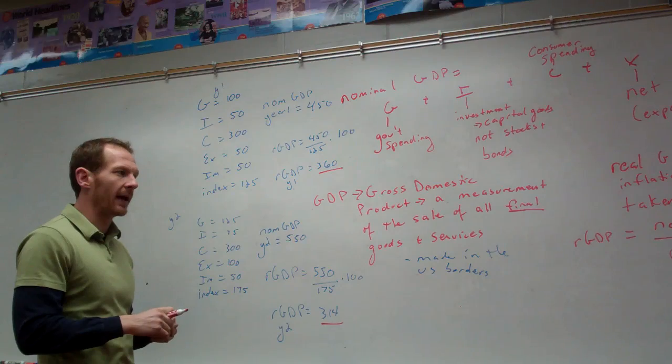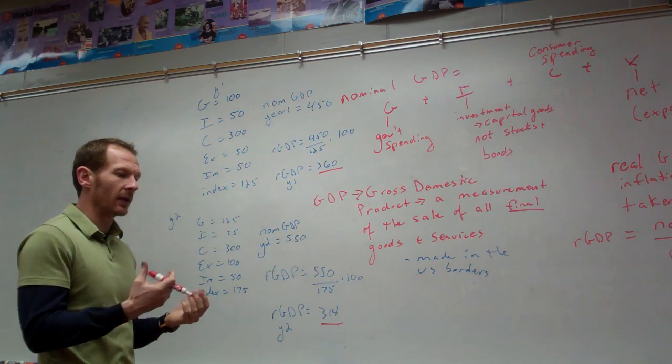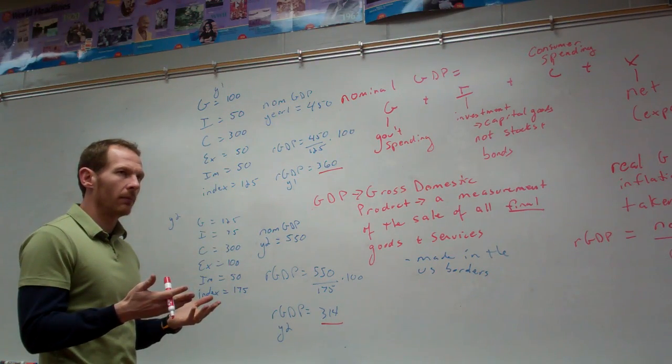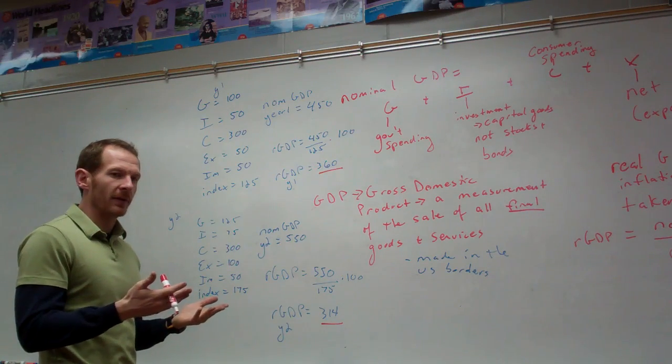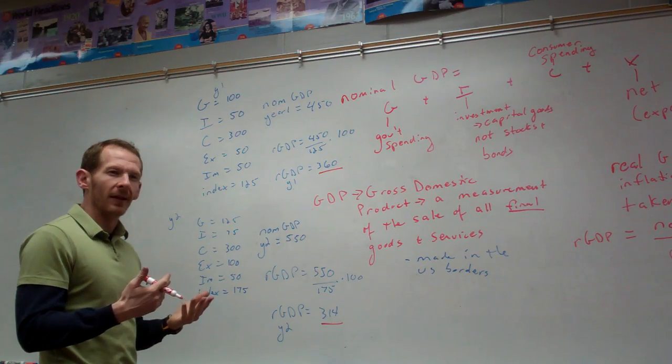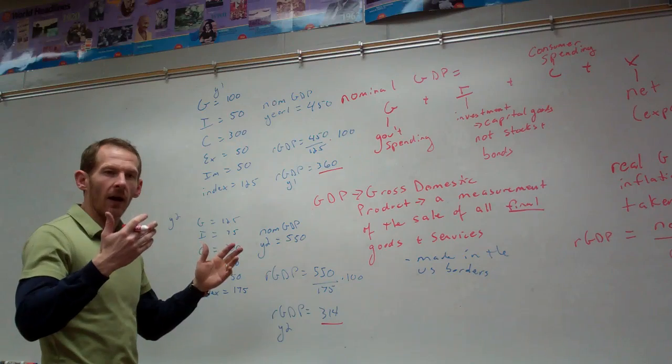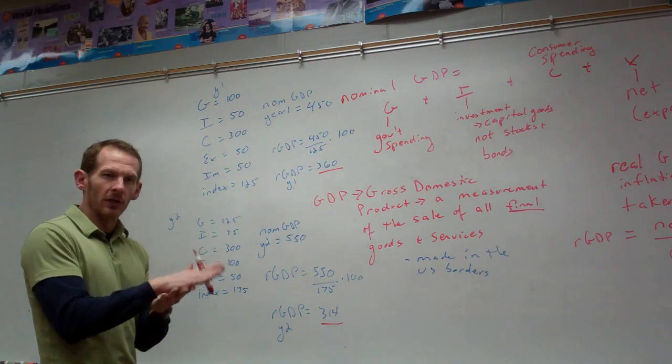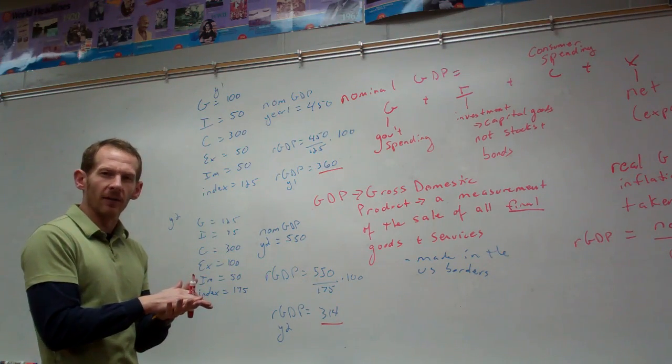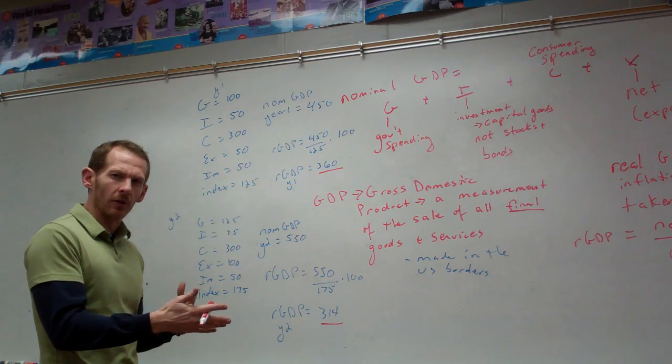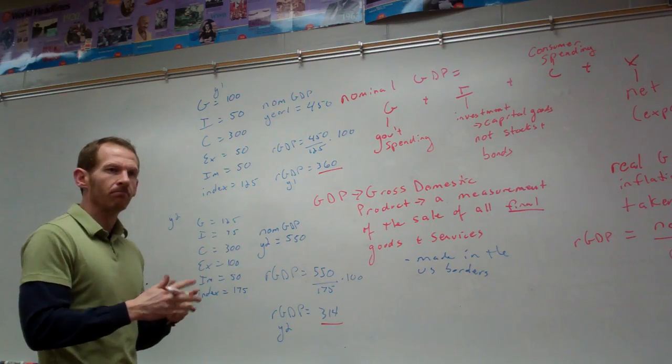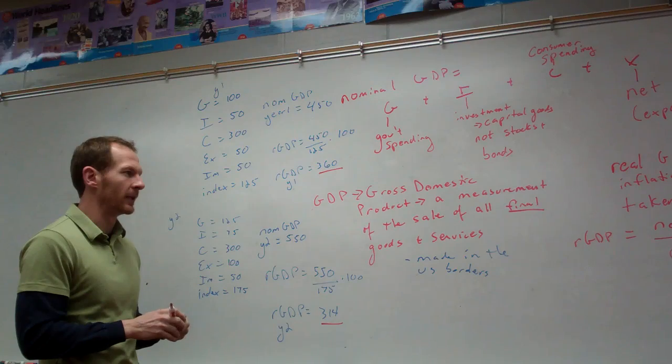And that's why we have price indexes, so we can compare years more accurately. Because if we didn't take inflation into it, then prices could go up dramatically, which would reduce our purchasing power and our standard of living, but it would look like we were a lot richer. So, once we back inflation out of it, then you can compare apples to apples.